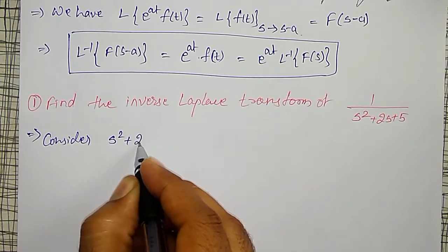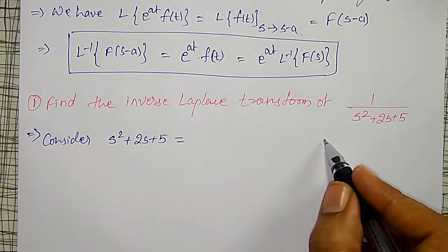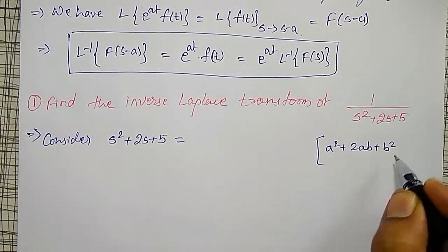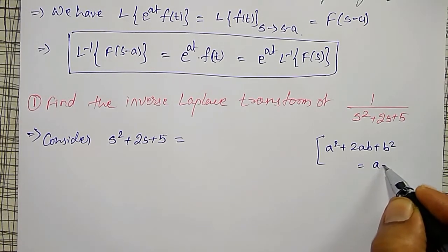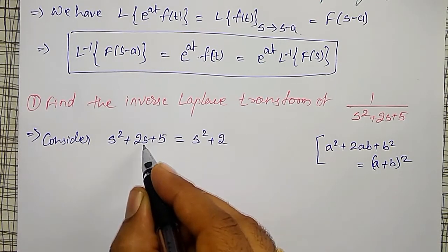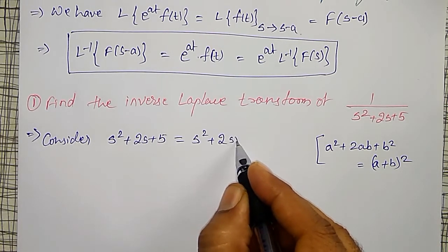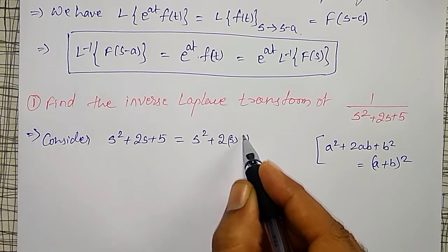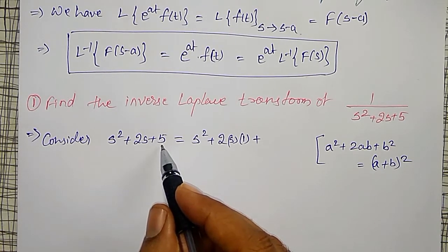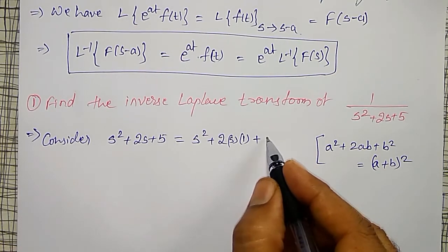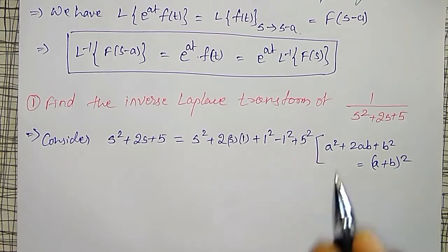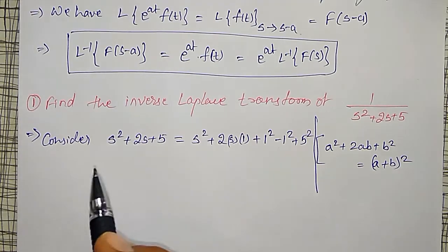For the perfect square, I want to write it in the form a squared plus 2ab plus b squared. The s squared term is there, and 2 into s is there — so a is s. I will take b as 1. Then 2ab gives 2s, matching the 2s term. I add and subtract b squared, which is 1 squared equals 1, keeping plus 5 as it is. Combining the first three terms: s squared plus 2s plus 1 squared becomes s plus 1 whole squared, then minus 1 plus 5 equals plus 4.